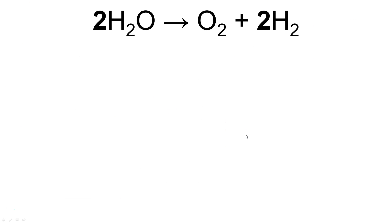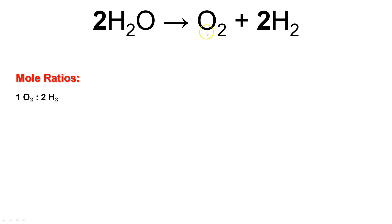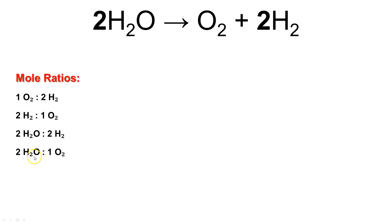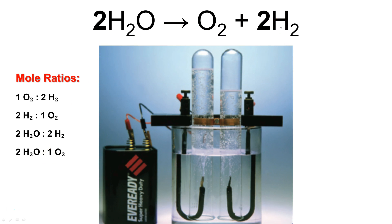Let's take a look at some real-life examples. Water can be broken down to form oxygen and hydrogen through electrolysis. I can get one mole of oxygen reacting with two moles of hydrogen, or two moles of hydrogen reacting with one mole of oxygen. I can get two moles of water reacting with two moles of hydrogen, or two moles of water reacting with one mole of oxygen. All of these are capable of being formed by just the coefficients.